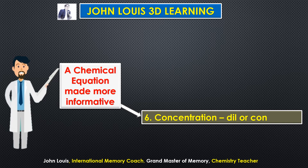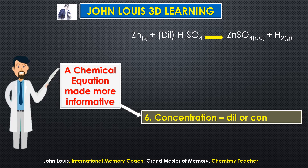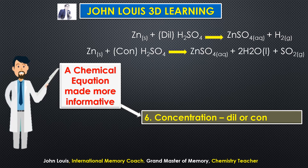The sixth point: concentration can also be mentioned in the equation — whether it is dilute or concentrated. For example: zinc plus dilute sulfuric acid, meaning the sulfuric acid has a very low concentration, gives zinc sulfate plus hydrogen. Another example: zinc plus concentrated (conc.) H₂SO₄, meaning the amount of sulfuric acid in the solution is much higher — that is what concentrated means.